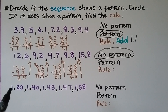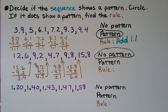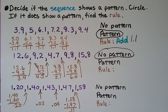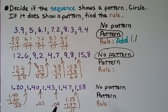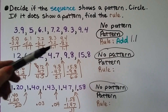For this sequence: 1 and 20 hundredths, 1 and 40 hundredths, 1 and 43 hundredths, 1 and 47 hundredths, 1 and 58 hundredths. The difference between the first two terms is 20 hundredths, the next is 3 hundredths, then 4 hundredths, then 11 hundredths. All differences are different, so there's no pattern and no rule. Only the sequence where all differences were equal had a pattern.